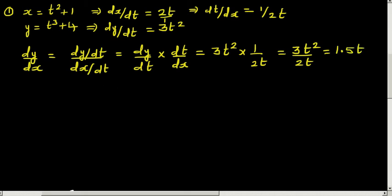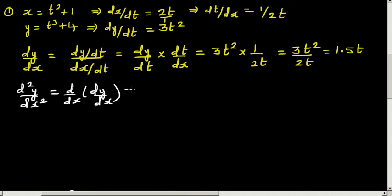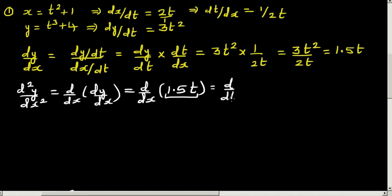Now we want to find the second derivative. The second derivative is d²y/dx², which is the same as d/dx of dy/dx. We know dy/dx is 1.5t, so this is d/dx of 1.5t. But 1.5t is in terms of t and we can't differentiate something in terms of t directly with respect to x.